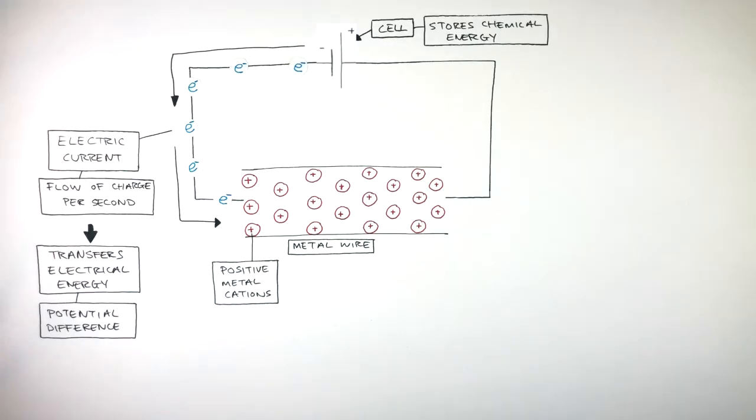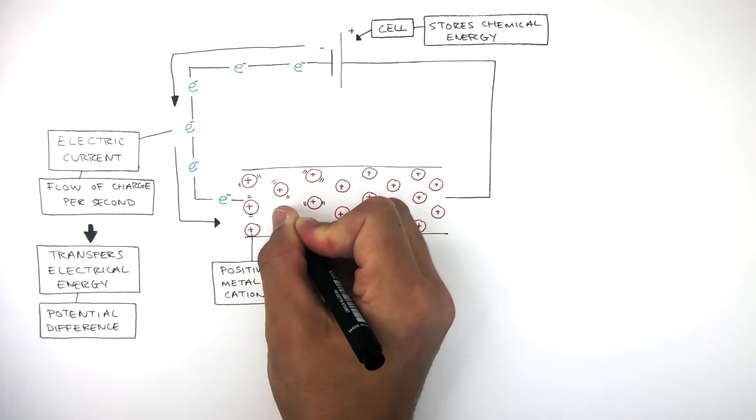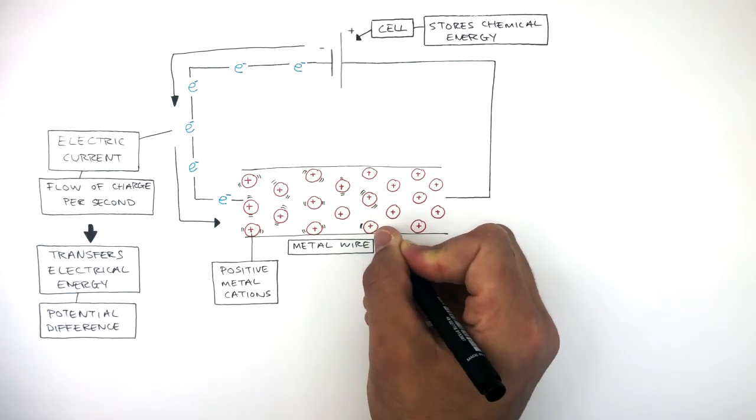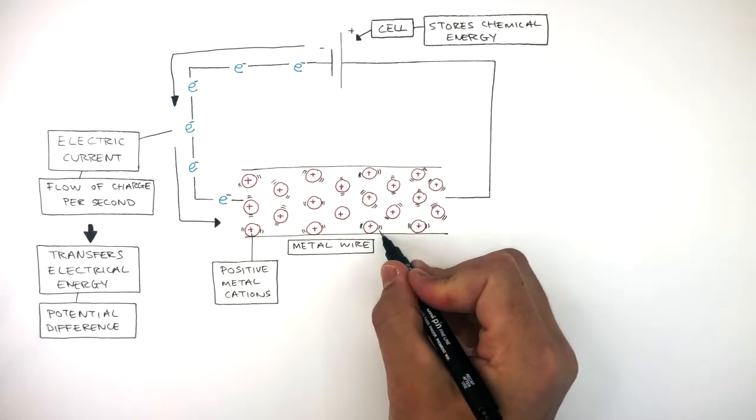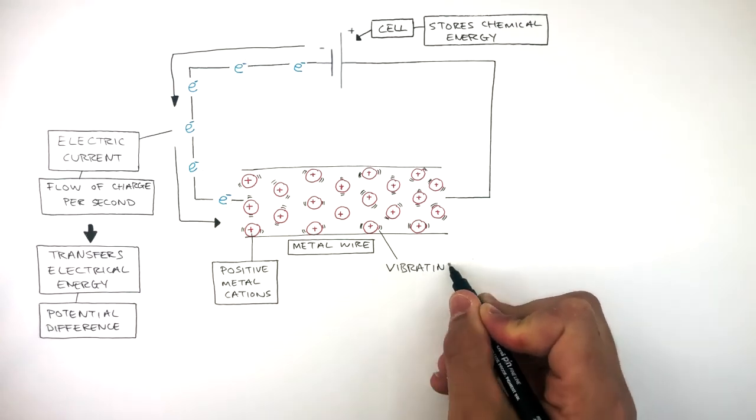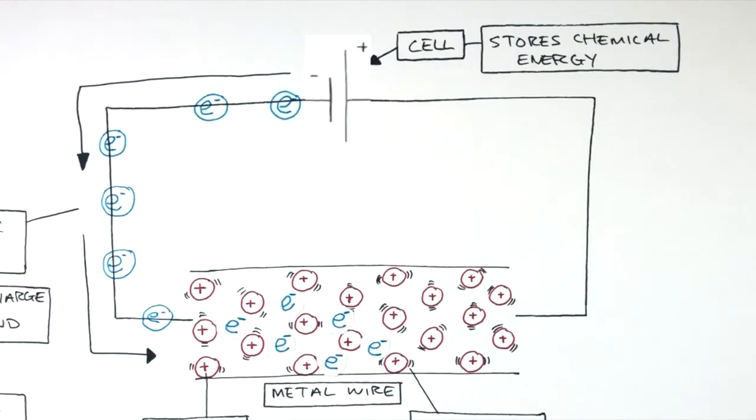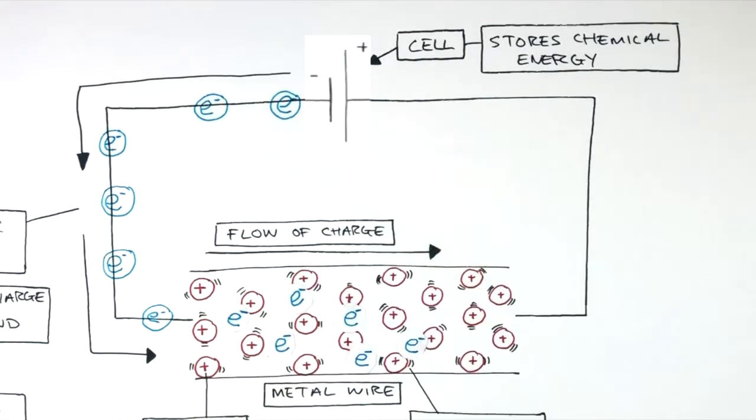These positive metal ions do vibrate about a fixed position, shown by these movement lines. These movement lines show how the positive metal ions are vibrating. We've zoomed in even more to see how this flow of charge interacts with the vibrating metal ions.